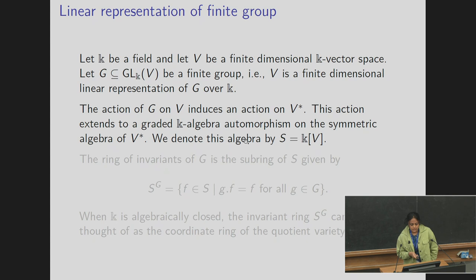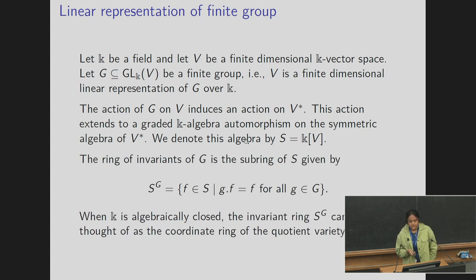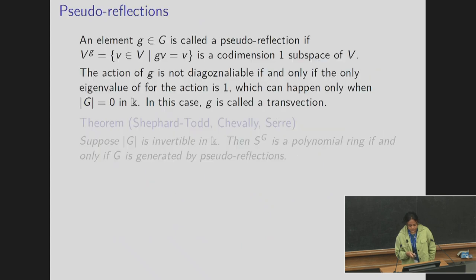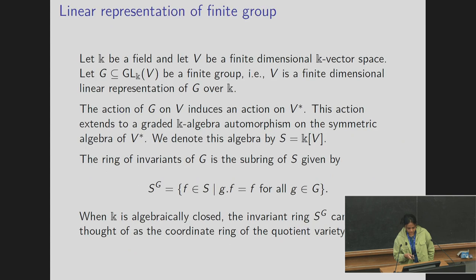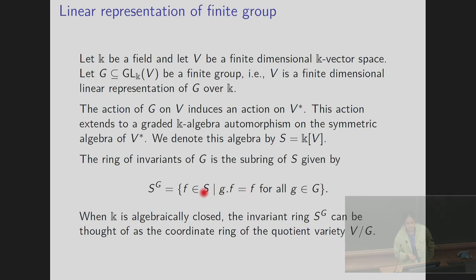The ring of invariants of G is the subring of S which is the set of all polynomials fixed by this action — that is, all f in S such that g·f = f for all g in G. When K is algebraically closed we can think of this invariant ring as the ring of functions for the quotient variety V mod G.